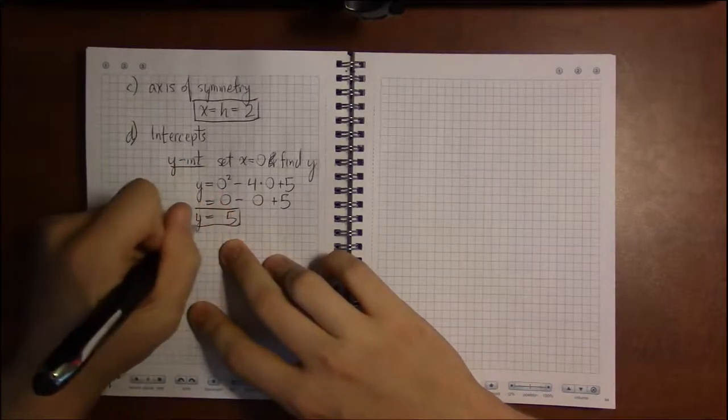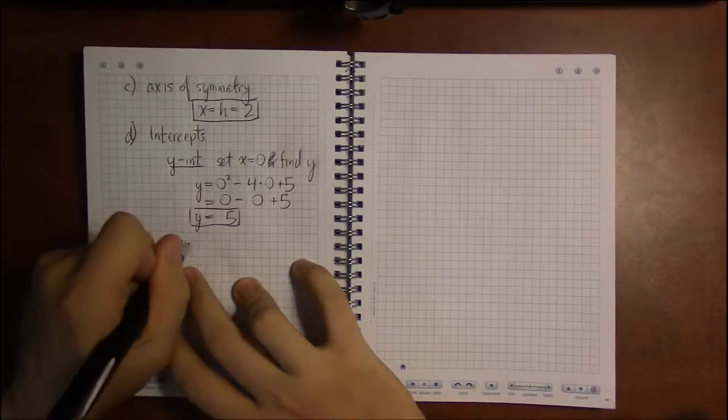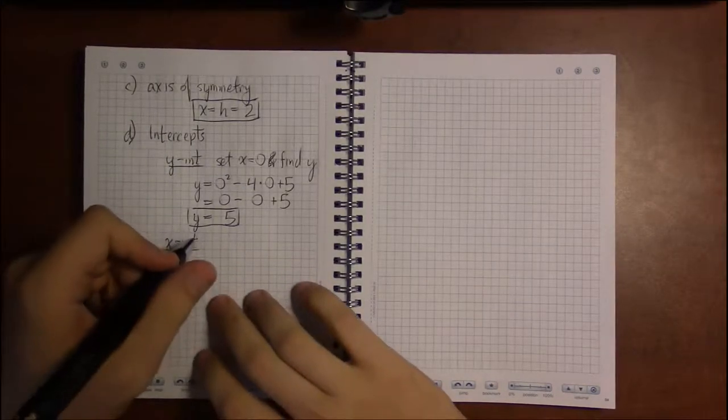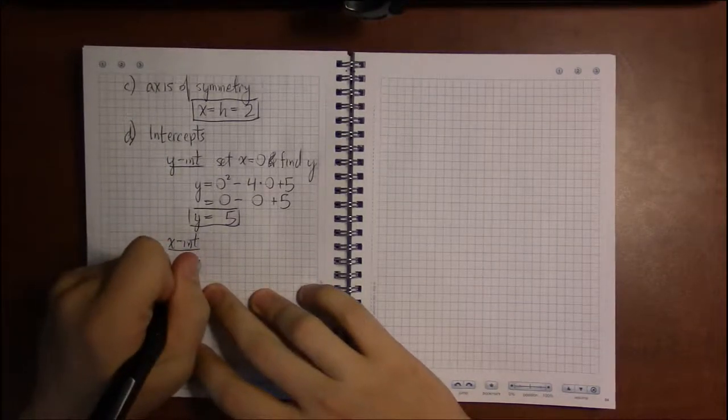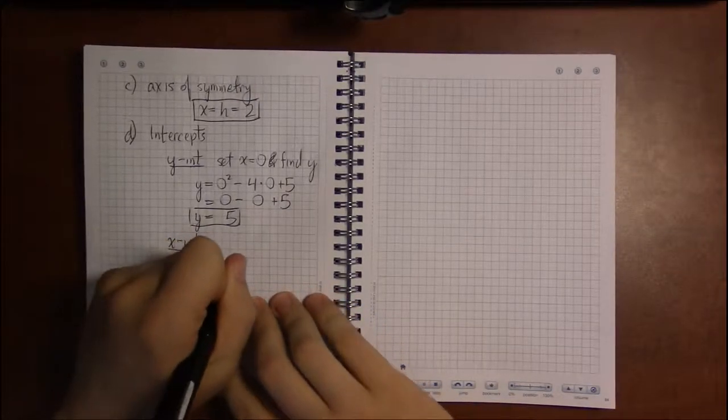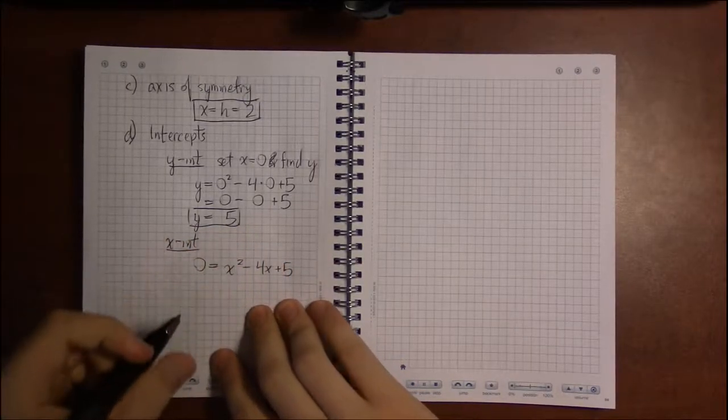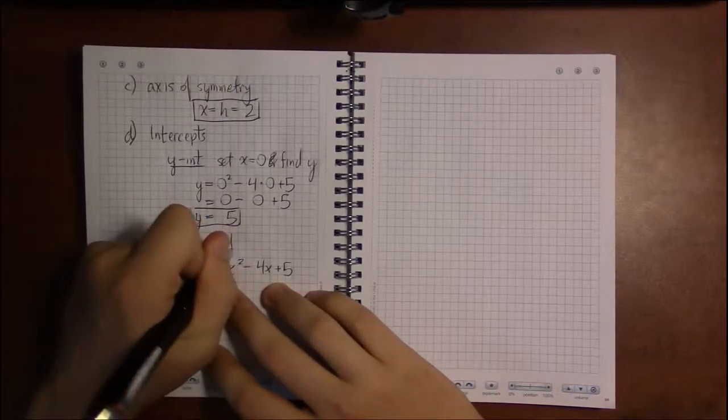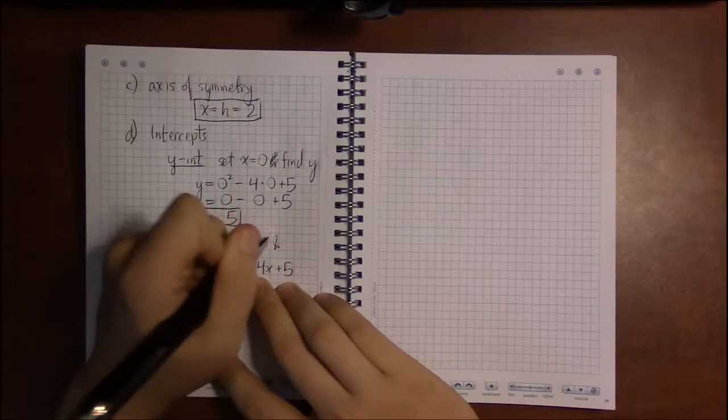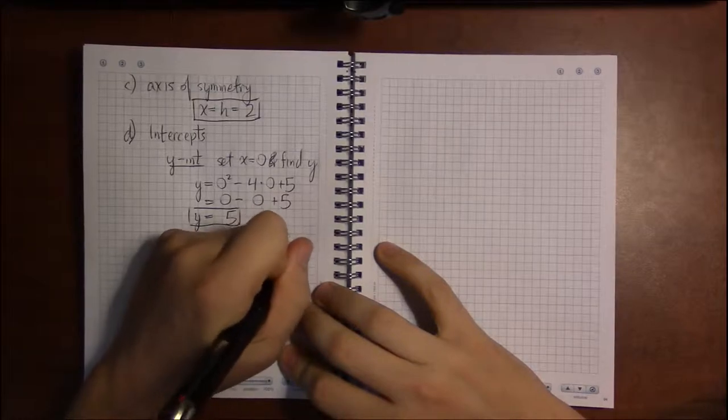Now for the x-intercept, this is the tricky part. This, unlike our last example, is not going to factor, and trying to solve 0 equals x squared minus 4x plus 5 by factoring is going to be pointless. And in fact, I would say again, quadratic formula is going to be too tedious.